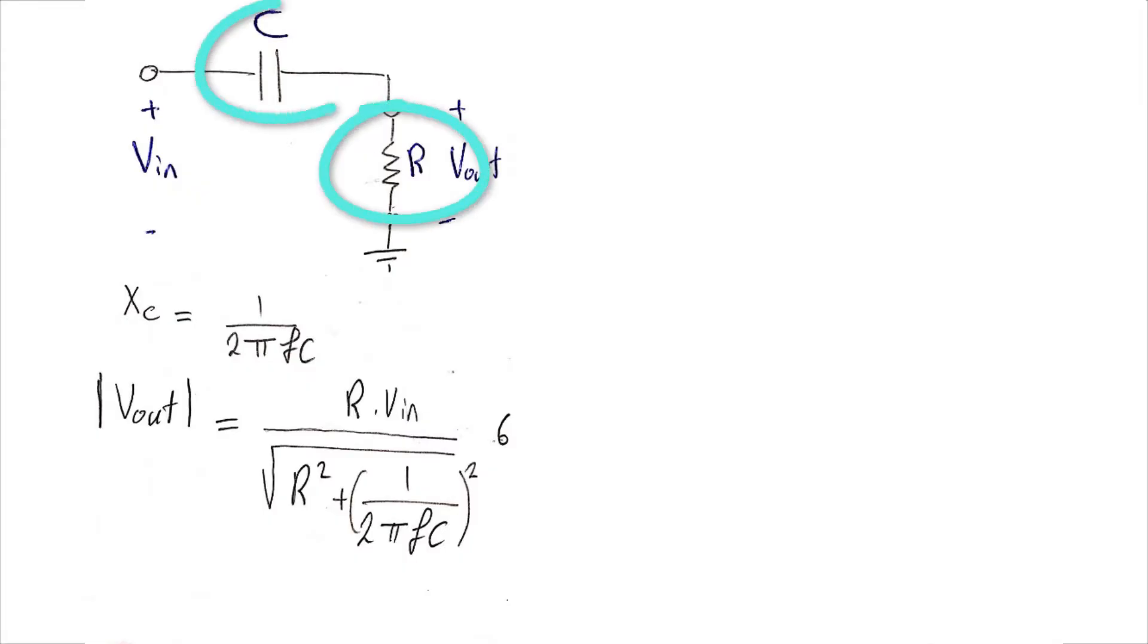So what values of R and C should we choose for this circuit design? Well, to have a better understanding, let's draw the frequency response of this circuit. So assume that we are feeding this circuit with a signal that has a very high frequency. And according to this formula, this term will be so small that it can be ignored, and these two parameters can be cancelled out.